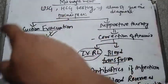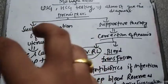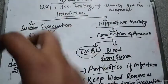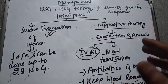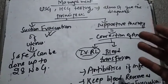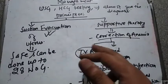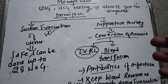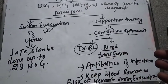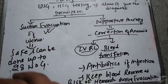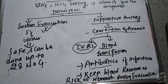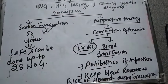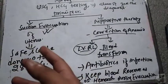The definitive management is suction and evacuation of the uterus — you evacuate the grape-like contents from the uterus. For supportive therapy, since the female often has anemia, you give IV Ringer's solution. If infection is suspected, antibiotics are given. During evacuation there can be risk of hemorrhage, so blood should be kept in reserve.